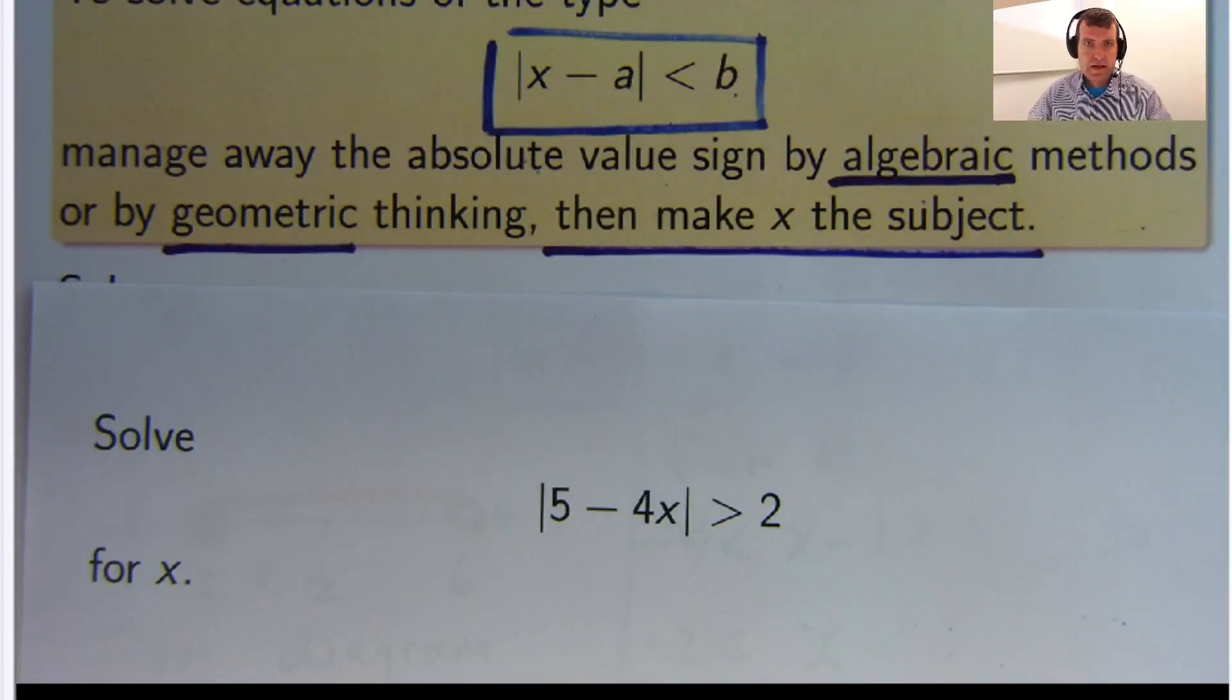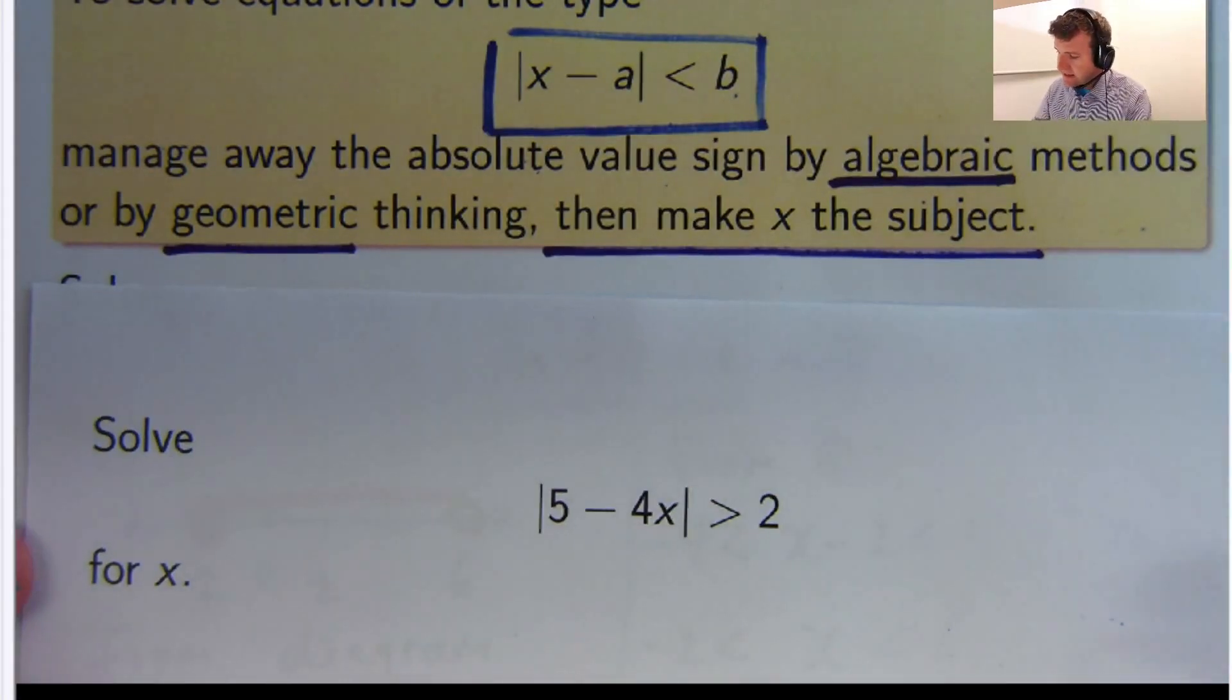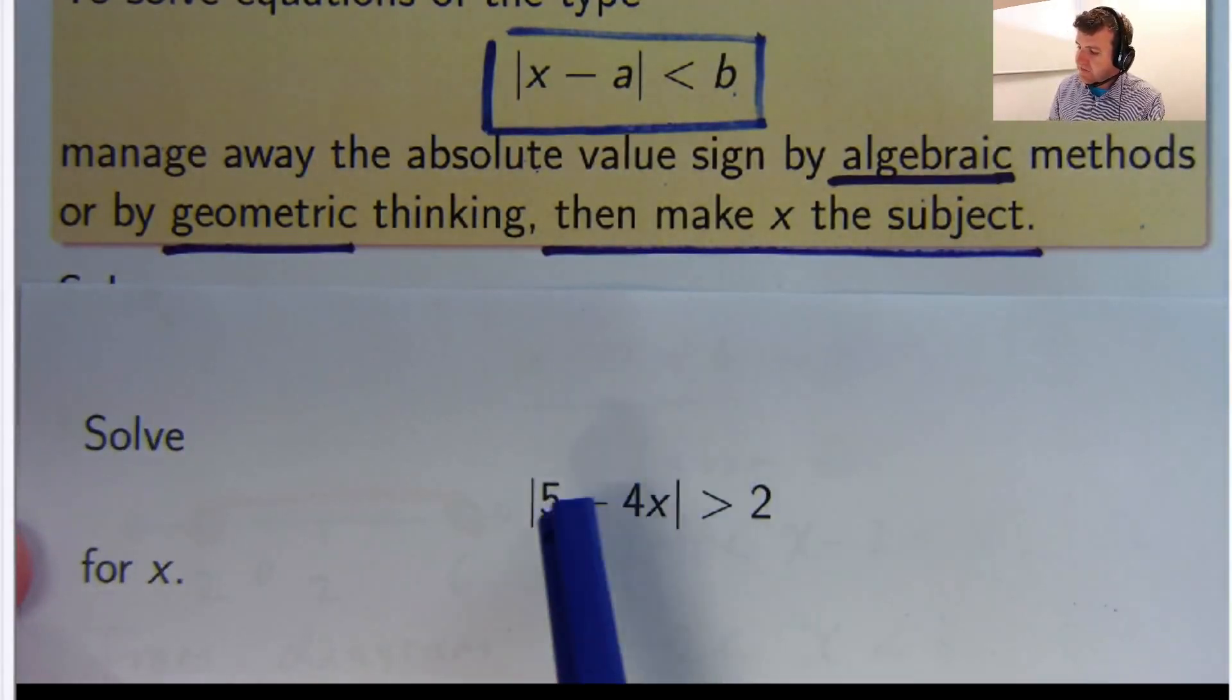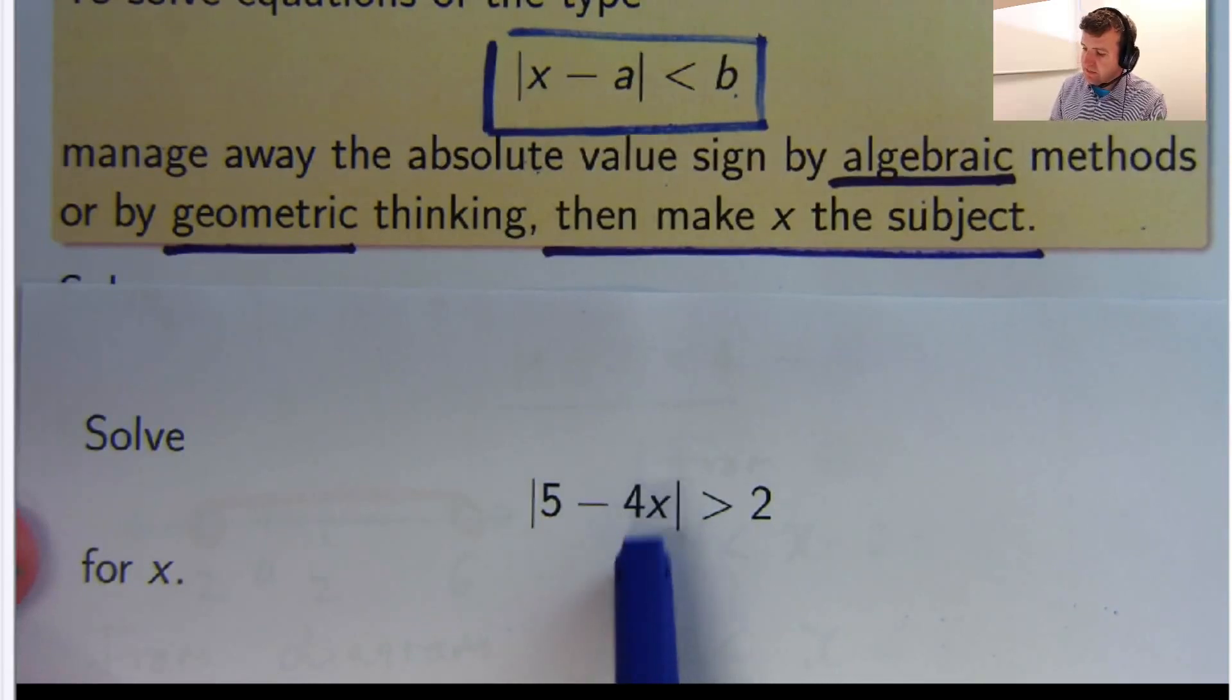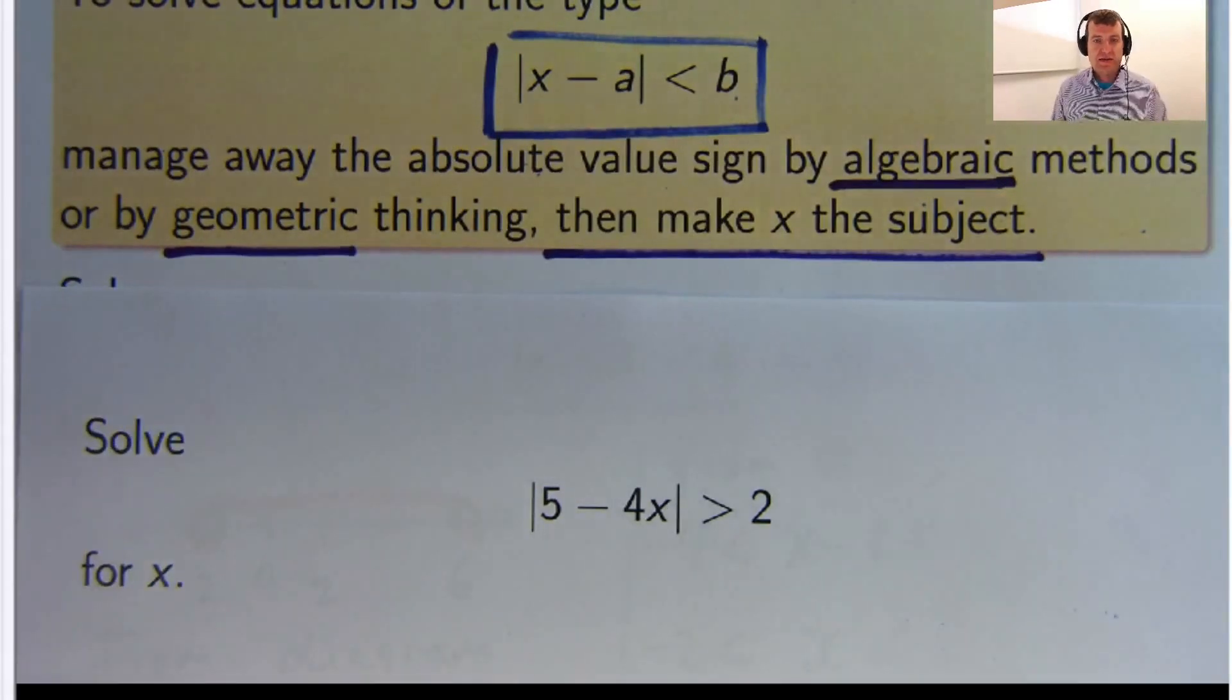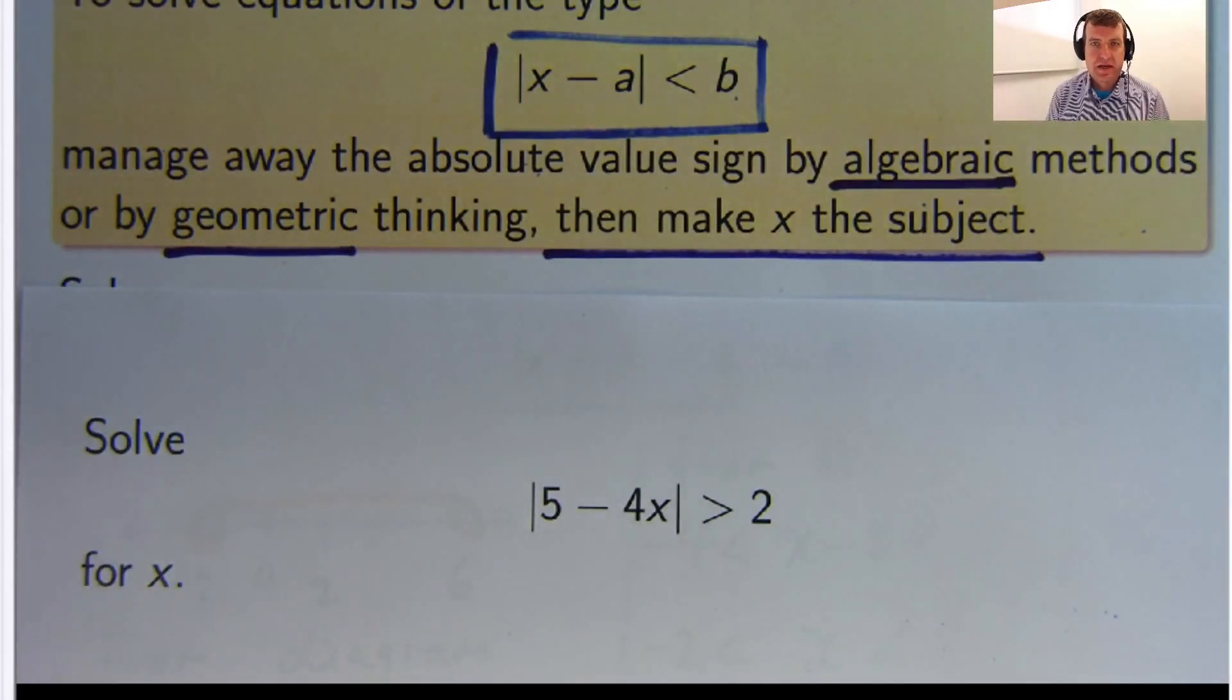the way that you can do this is to interpret absolute values as distances. Okay, so if I look at this, firstly I've got 5 minus 4x. What I would like to do is manage away the negative 4. Okay, so and make it x minus something. Okay, so how would I do that? Well,